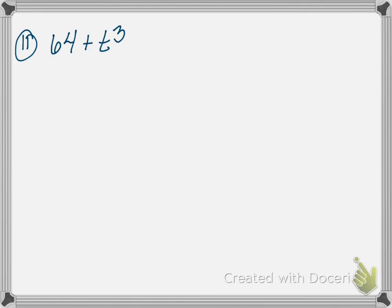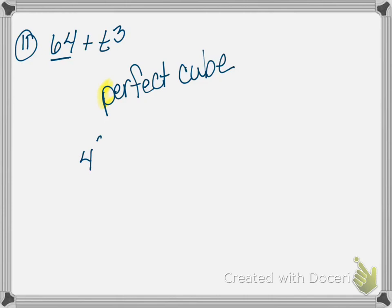Number 11 is a special factoring case — a perfect cube. We are not focusing on perfect cubes in this class. Note that 64 is 4 times 4 times 4, which is 4 cubed — a perfect cube. It comes up a little later, but it's not something you need to worry about now. You may omit this one on your homework.